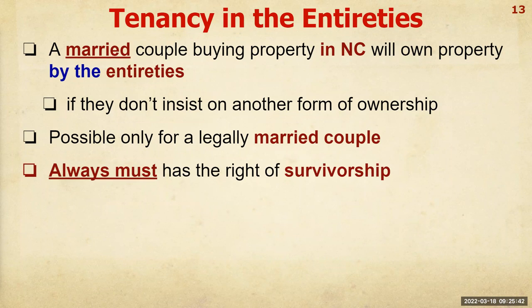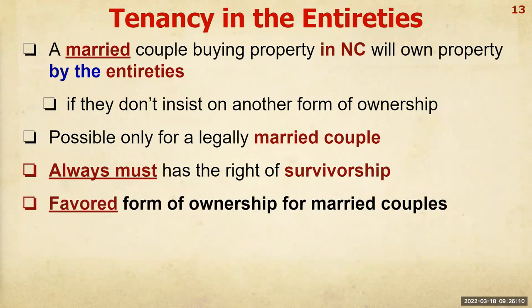Tenancy by the entireties always has the right of survivorship, and that survivorship cannot be defeated — it can't be overturned or circumvented. If one spouse writes a will leaving the property to somebody else, the will is not enforceable. This is a marital protection built into this form of ownership. It is the legally favored form of ownership in North Carolina for married couples — meaning it's what our laws provide for.